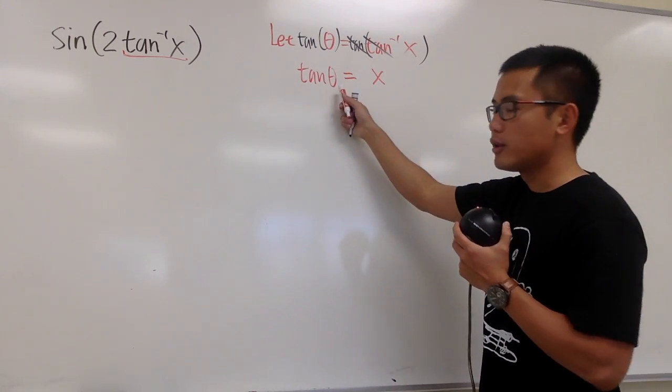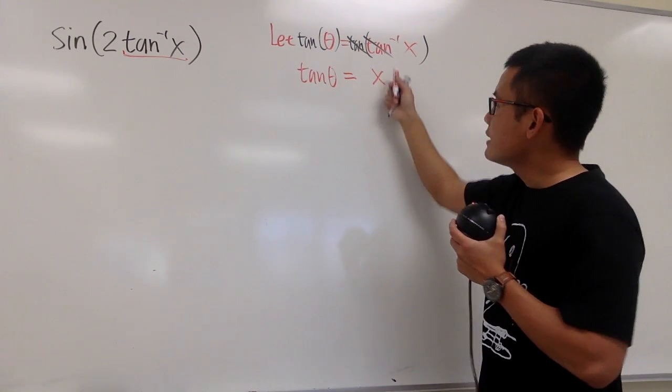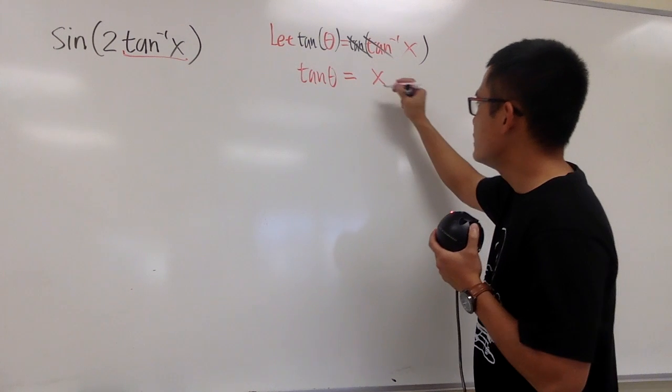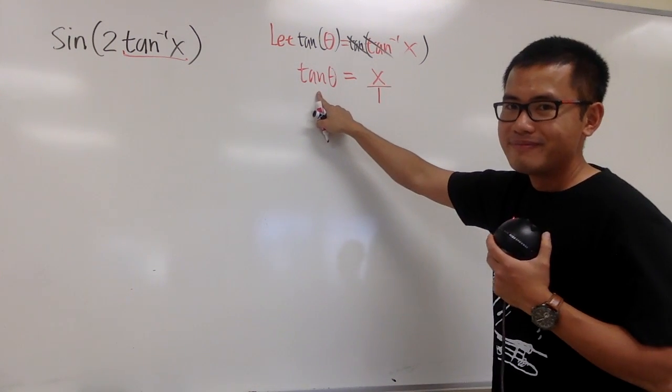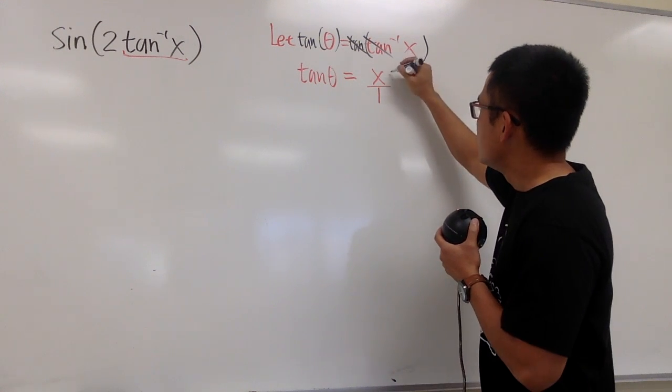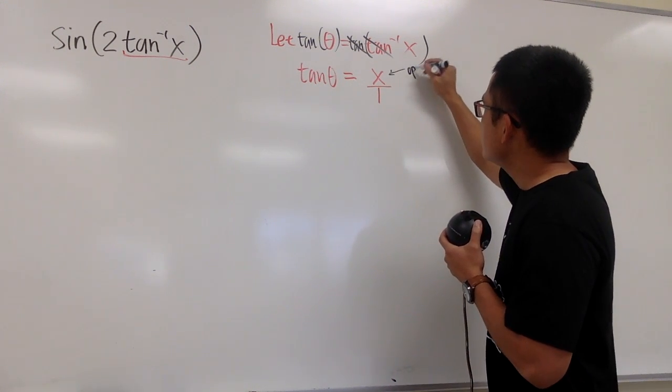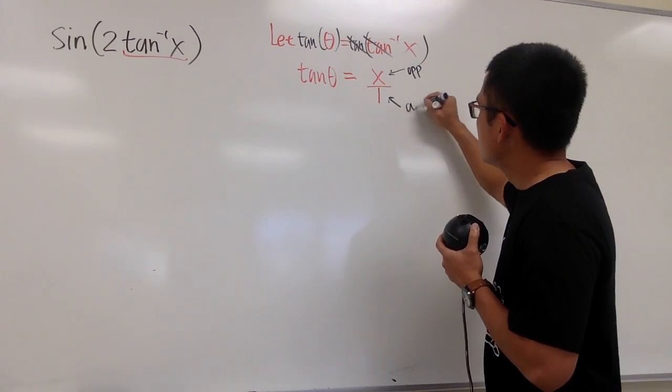When we have tangent of angle equal to x, let's look at this as a fraction. We can put this down as x over 1. And tangent, we know, the definition in the right triangle is equal to opposite over adjacent.